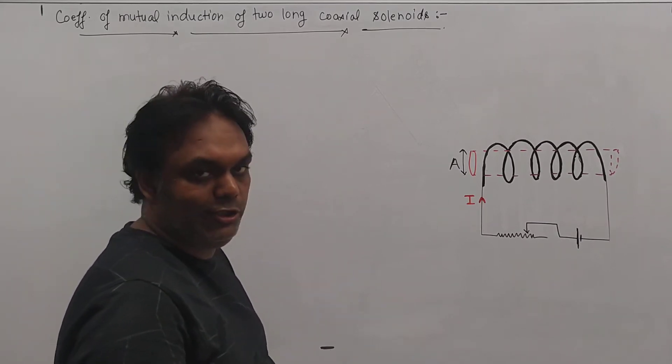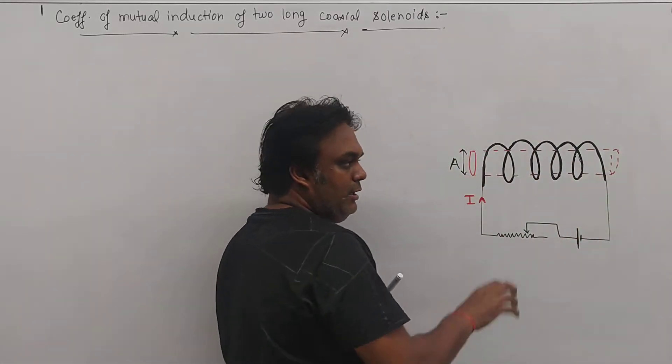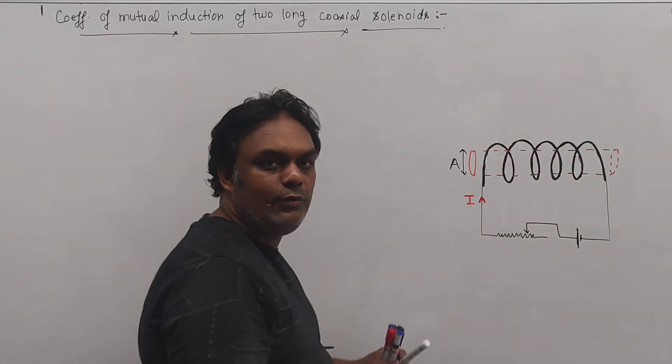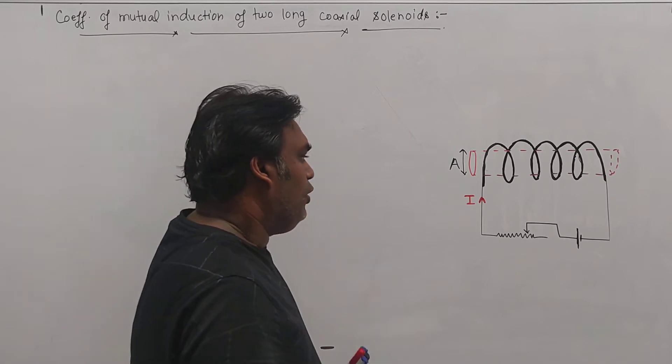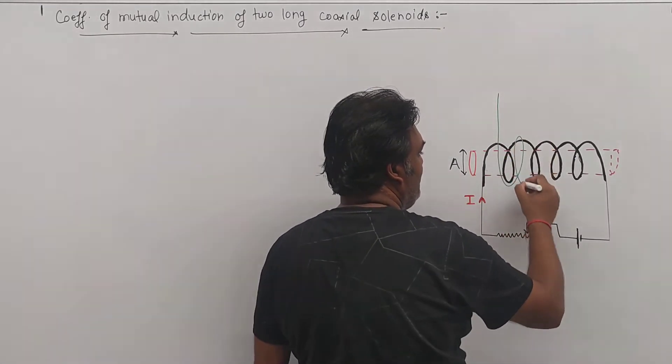Let us first see what is coaxial solenoid. Here in this figure you see one solenoid - a single core with wire wound around this core. So this is a single solenoid. On this same core if we put one more...